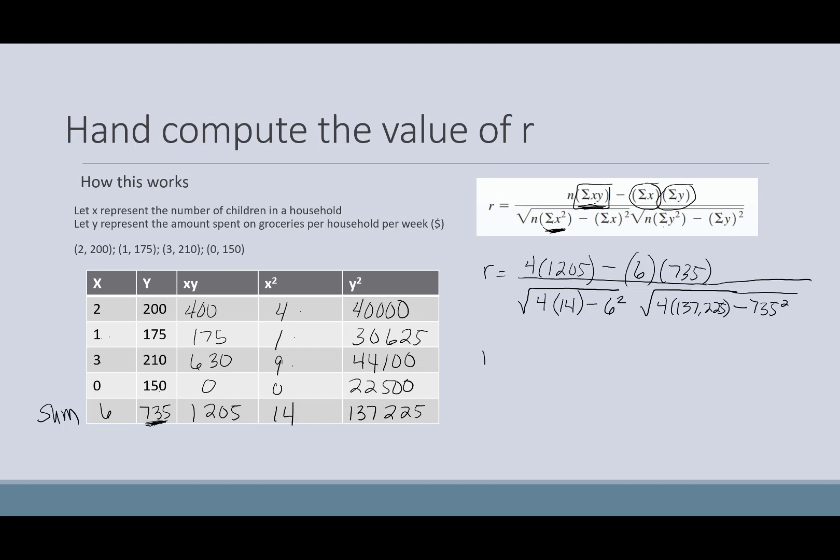And that gives me 410 in the numerator. Now in the denominator, I'm going to have the square root of 4 times 14 minus 6 squared, and then times that by the square root of 4 times 137,225 minus 735 squared. And when I do all that, I get 416.53 approximately in the denominator.